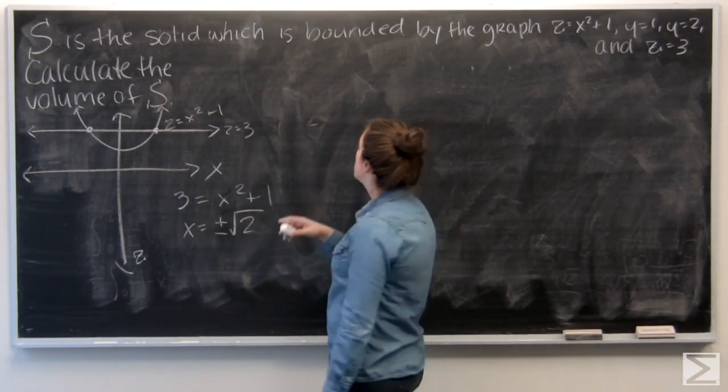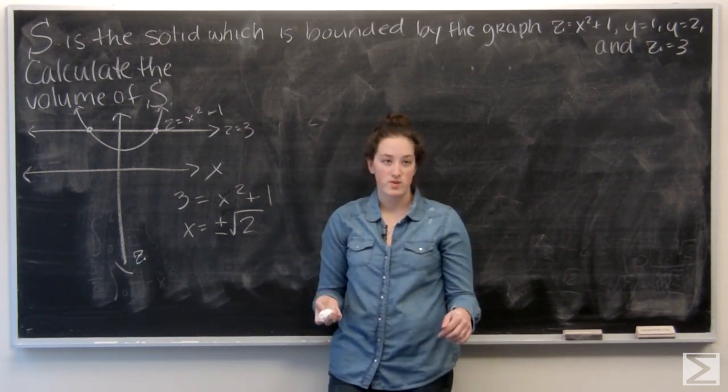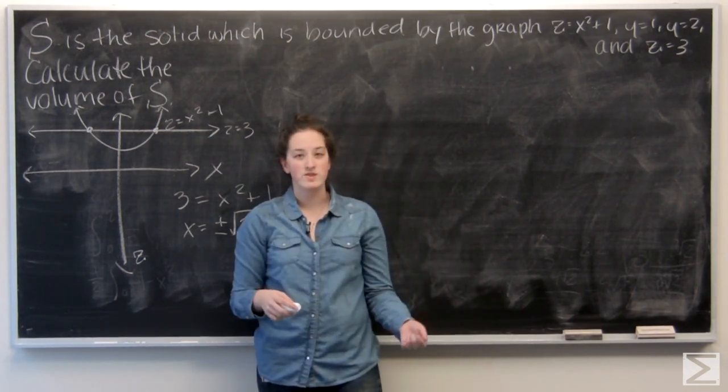I'm given a solid S, and it's defined by being bounded by z equals x squared plus 1, y equals 1, y equals 2, and z equals 3.